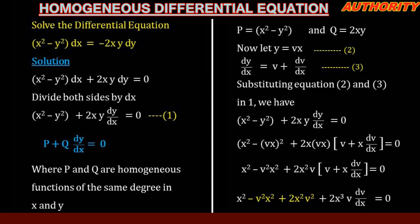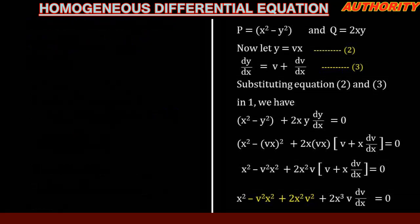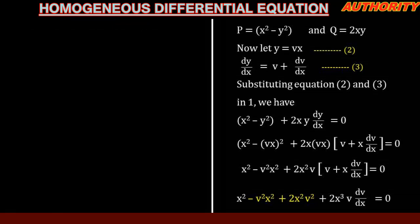Looking closely, we have minus v squared x squared and plus 2x squared v squared. Combining these: minus v squared x squared plus 2x squared v squared equals v squared x squared. So the equation becomes: x squared plus v squared x squared plus 2x cubed v dv/dx equal to zero.